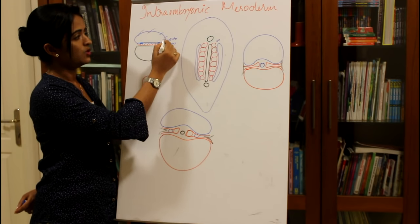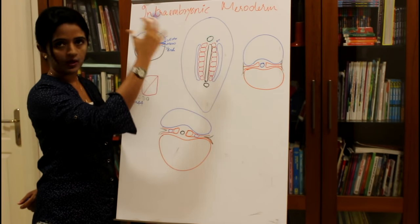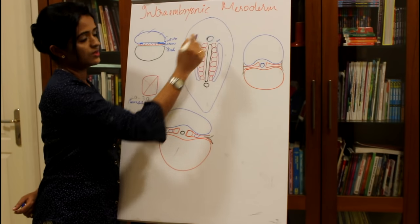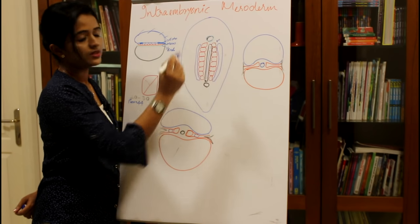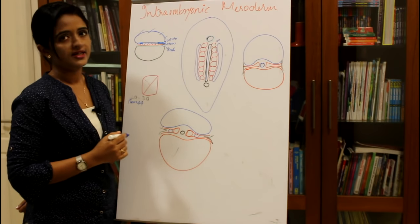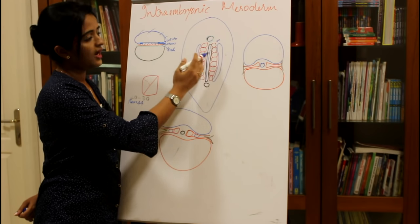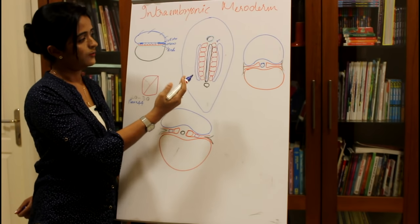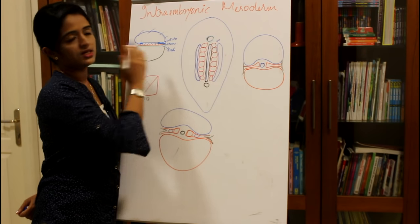If we remove the amniotic sac and view from above, we can see the pre-chordal plate giving rise to the buccopharyngeal membrane, the cloacal membrane at the caudal end, and in the midline a cord-like structure called the notochord. The notochord acts as a mold for vertebral development. On either side of the notochord lies the mesoderm, and a longitudinal groove develops within it.